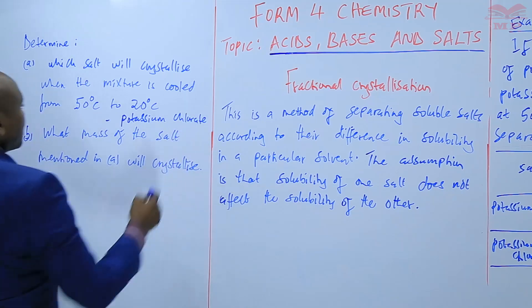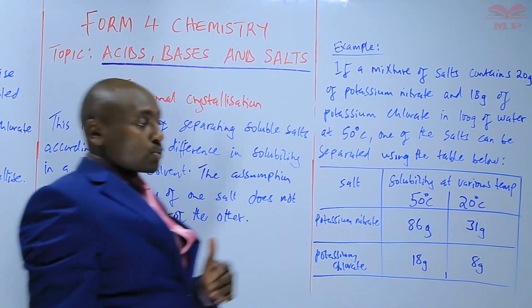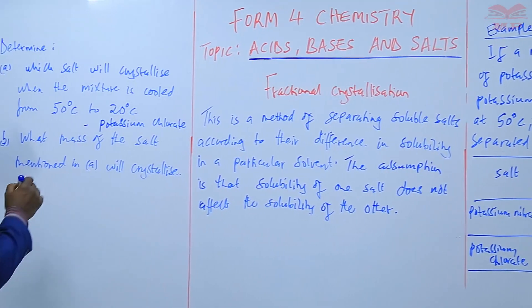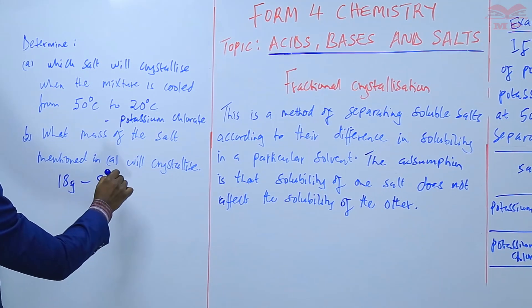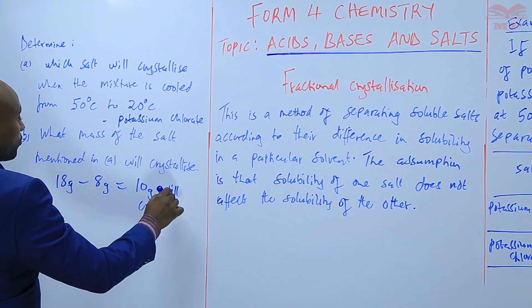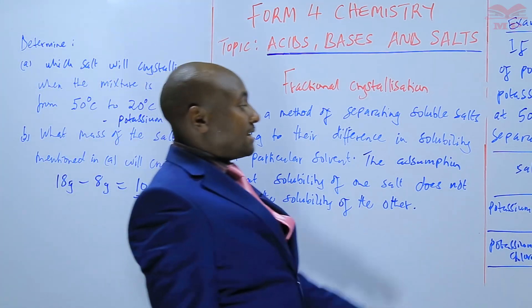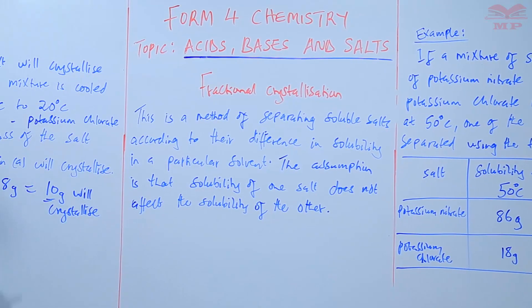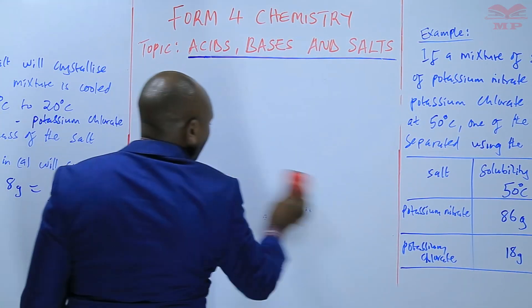By cooling from 50 to 20 degrees Celsius, we lower the solubility of potassium chloride from 18 grams to 8 grams. The mass that will crystallize is 18 minus 8, which equals 10 grams of potassium chloride. This example is a clear indication that it is possible to separate two salts of different solubilities — and that is what we call fractional crystallization.